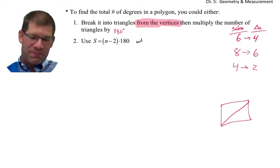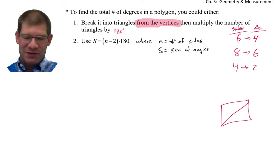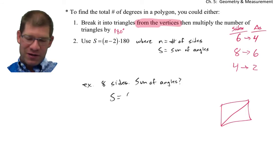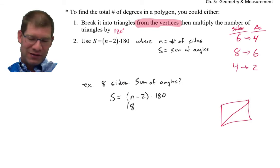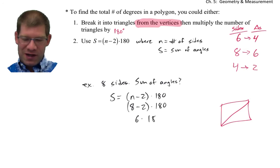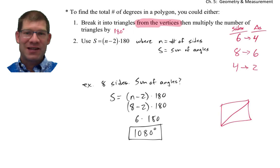Where N equals the number of sides, and S equals the sum of the angles. For example, an eight-sided object — I'll copy the equation and plug in eight for N. Eight minus two is six, six times 180 gives 1,080 degrees. So any octagon, any eight-sided object, is going to have 1,080 degrees total. That's it for this section — let me know if you have any questions.